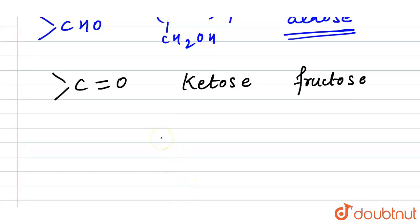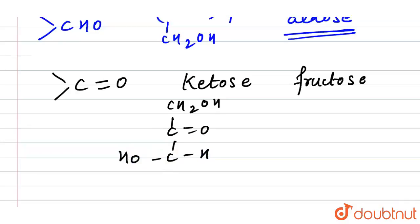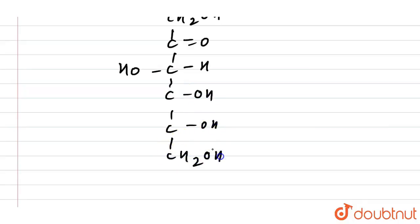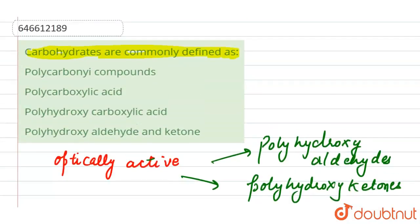Here is the open-chain structure of fructose: CH2OH at the top, followed by C=O (the ketone group), then CHOH, COH, COH, and CH2OH at the bottom, with H groups on each side. This confirms that carbohydrates are defined as polyhydroxy aldehydes or polyhydroxy ketones.